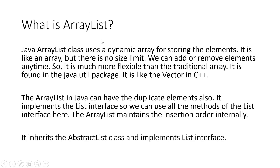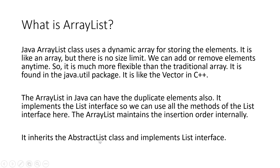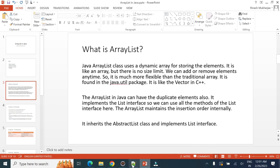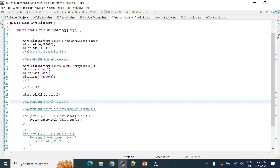Java ArrayList class uses a dynamic array for storing elements. It is like an array but there is no size limit and we can add or remove elements anytime, so it is much more flexible than a traditional array. It is found in the java.util package and is like a vector in C++. ArrayList in Java can have duplicate elements, implements the List interface, and maintains insertion order.